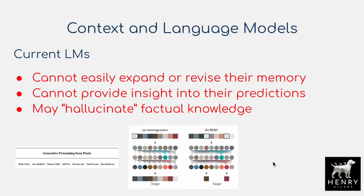Language models refers to these deep neural networks that are trained to perform the task of predicting a masked-out token. This can be done in an autoregressive way where you use all the context on the left to predict a masked-out token on the right, or just a masked token at the end of the sequence to generate text. You can also have these masks in the middle of the sequence, like in the BERT model, and then use the left and right context to predict these intermediate tokens.